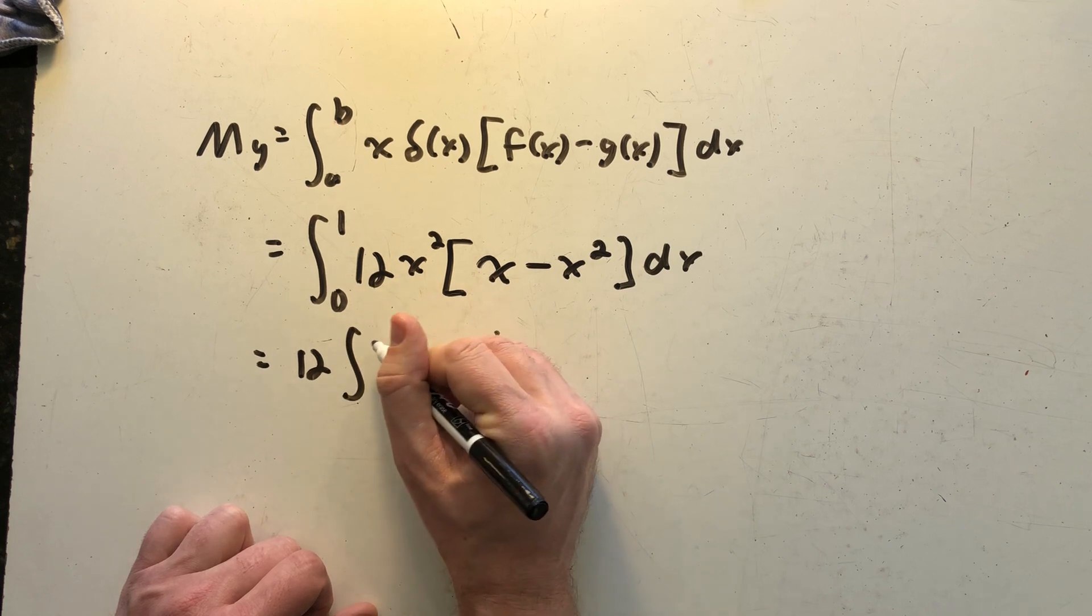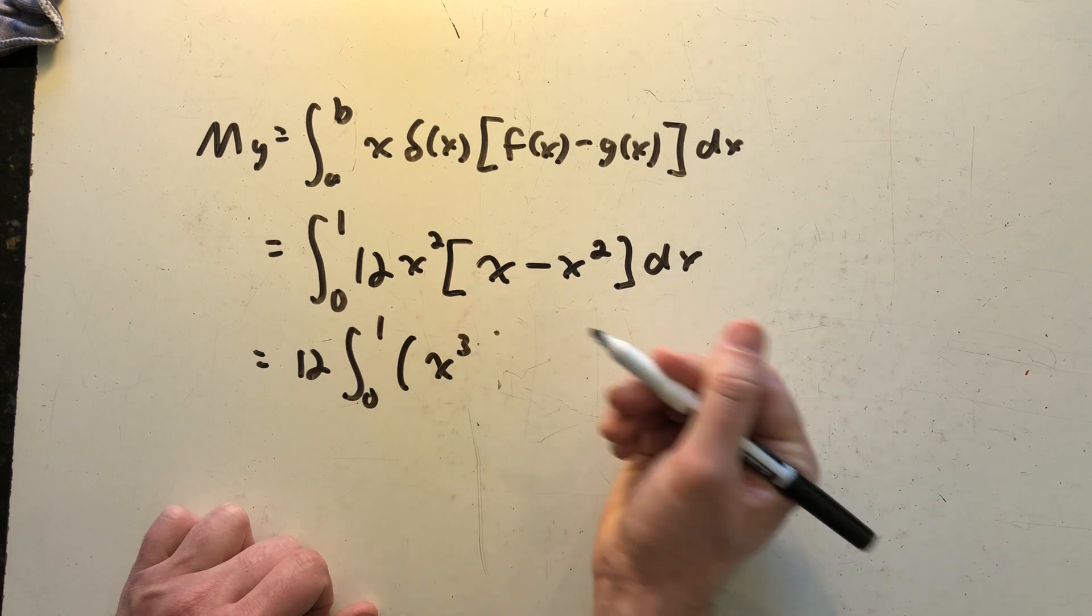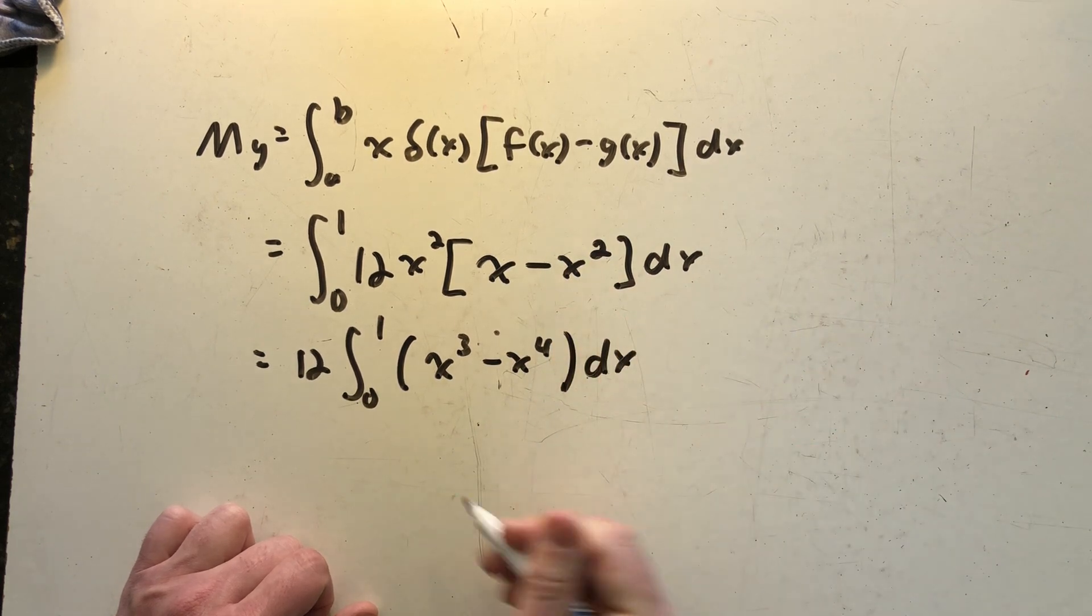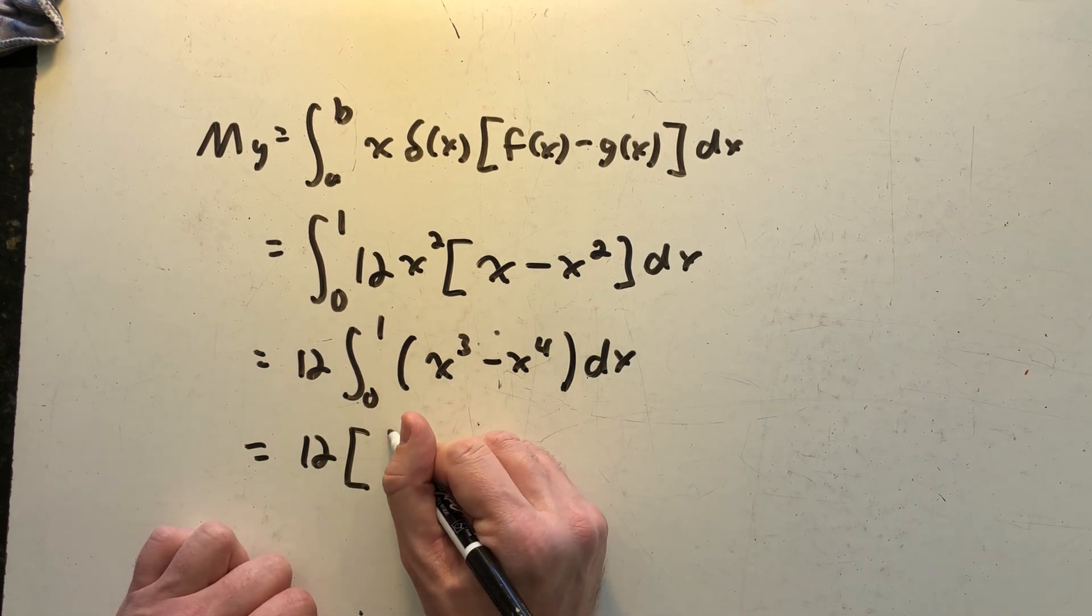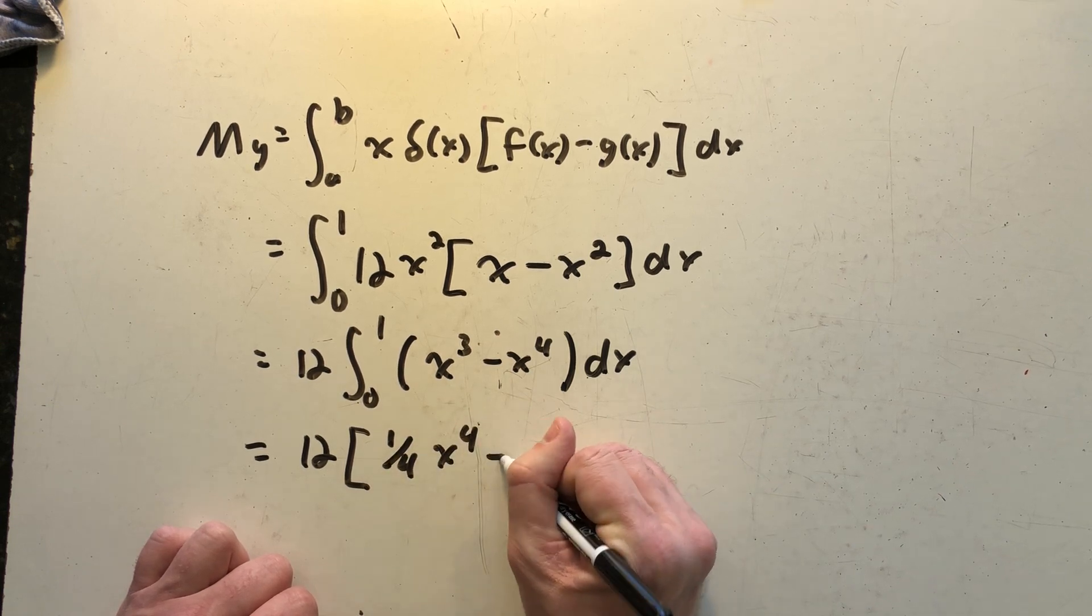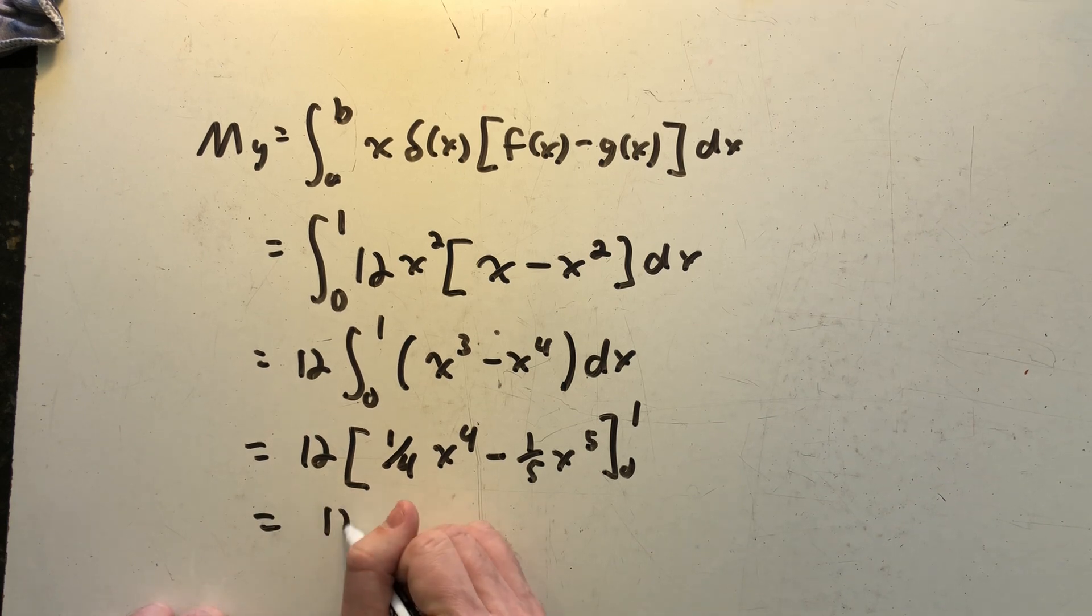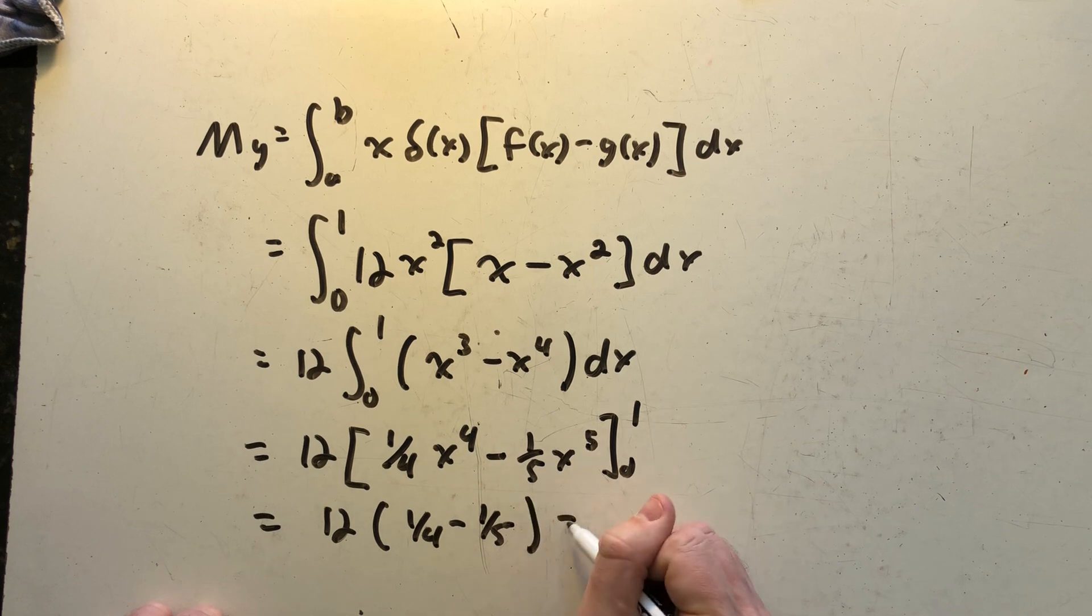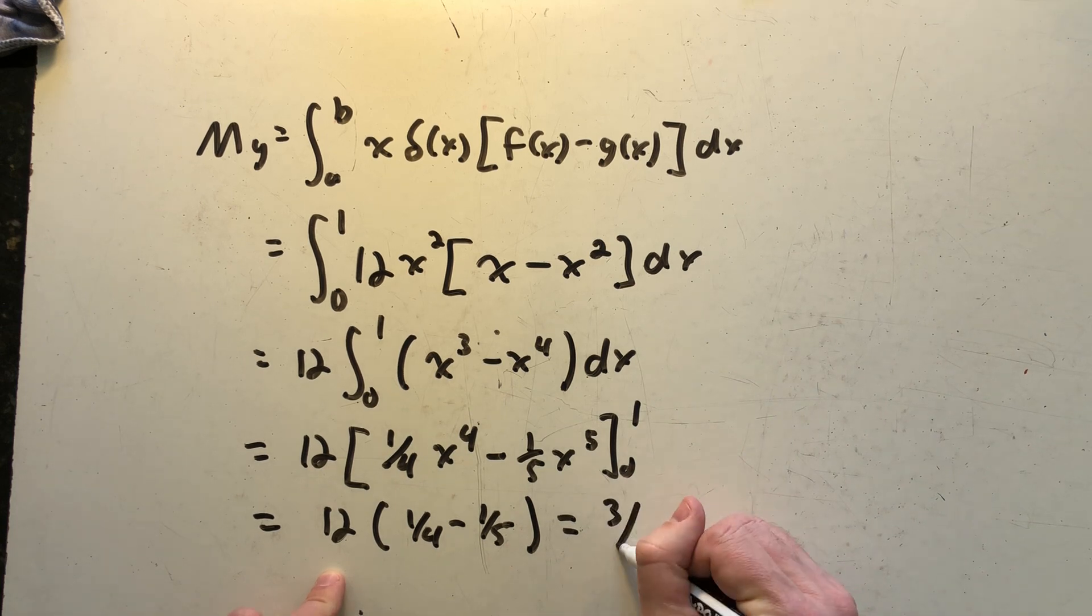We can pull that 12 out front and distribute the x squared through here. And we're ready to find an antiderivative. And we're evaluating from zero to one. So let's see I have 12 times one fourth minus one fifth.